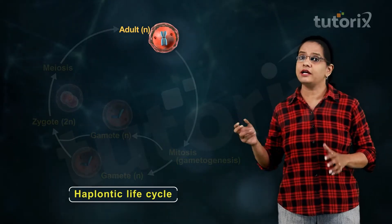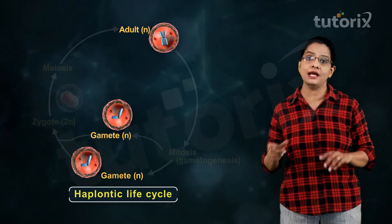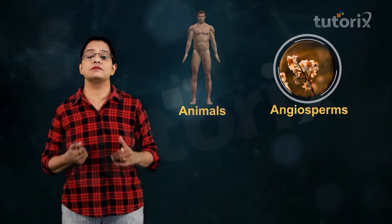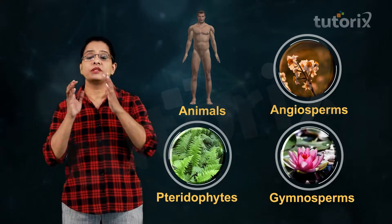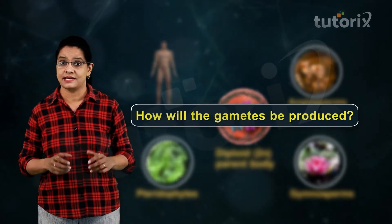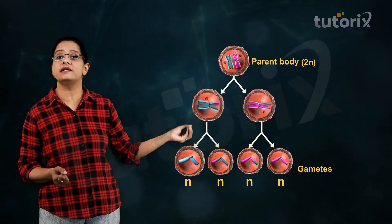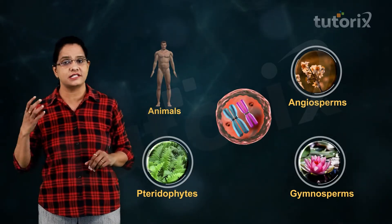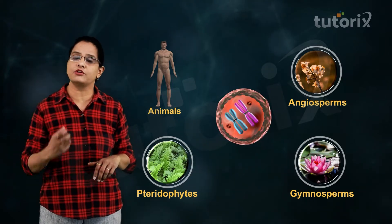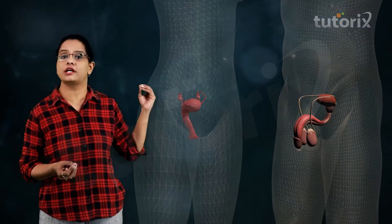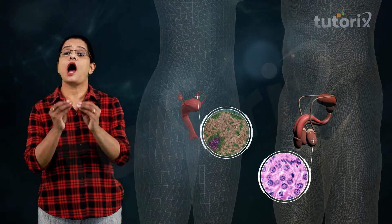In most animals, angiosperms, pteridophytes, and gymnosperms, the parent body is diploid. Here, gametes are produced by reductional division — meiosis. In order to maintain chromosome number, meiotic divisions occur to produce gametes in diploid organisms.